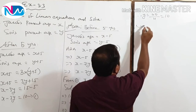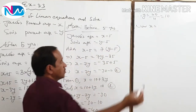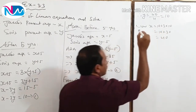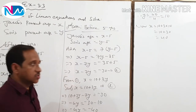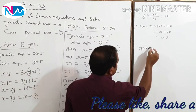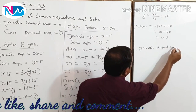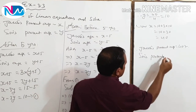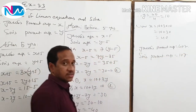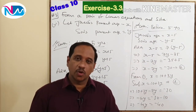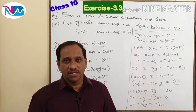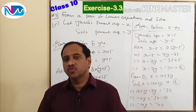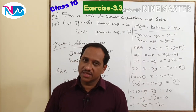Therefore, Jacob's present age is 40 years and his son's present age is 10 years. With this question, I wind up exercise 3.3 of the NCERT textbook. We will learn the next method of solving a pair of linear equations in two variables — that is, the elimination method — in the next class, along with word problems based on the elimination method. Till then, take care. Goodbye.